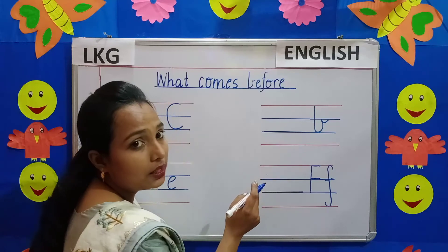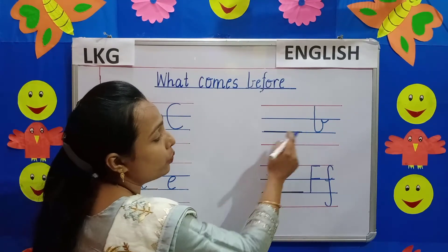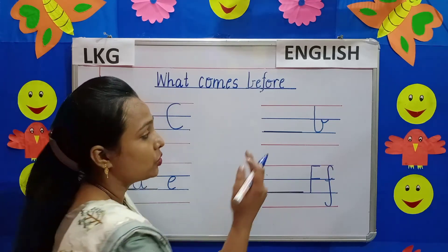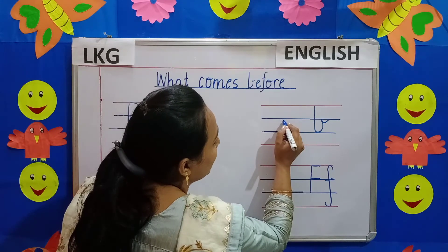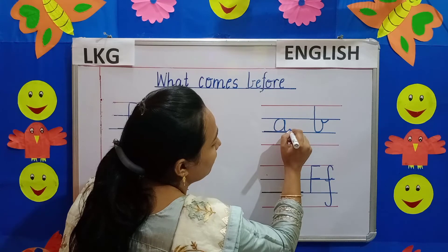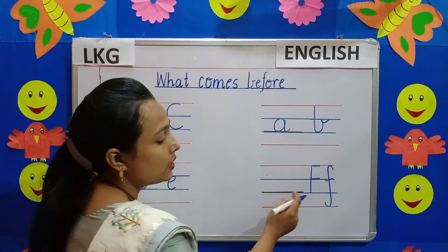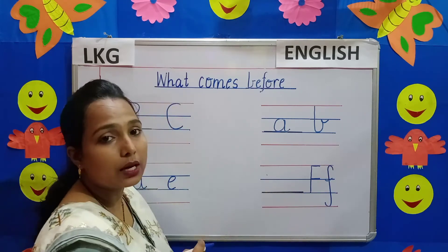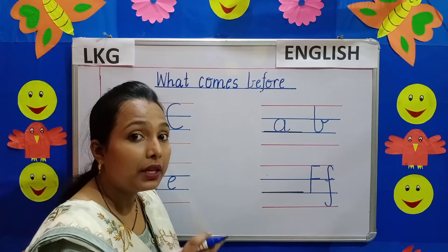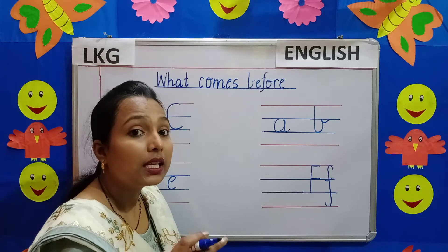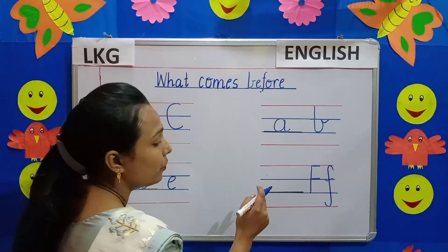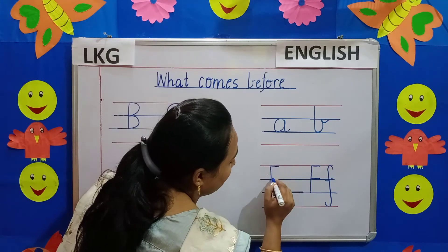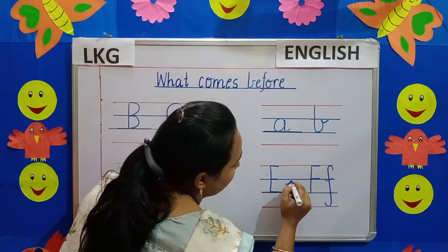Our next letter is small letter B. Which letter comes before B? Let us recall: A, B. So here we will write small letter A. Our next letter is letter F — capital letter F and small letter F. Which letter comes before F? A, B, C, D, E, F — so we will write letter E here. First we will write capital letter E, then small letter E. Now we have done 'what comes before'.